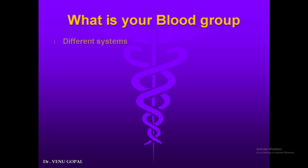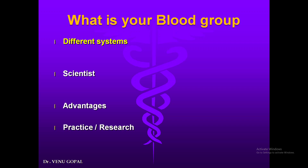This will be an essay question in the exam, so you need to study the different systems such as the ABO system and Rh system — there are 30 different blood group systems in total. You also need to identify the scientist who discovered blood groups, and list out all the advantages of knowing your blood group in clinical practice as well as in scientific research.